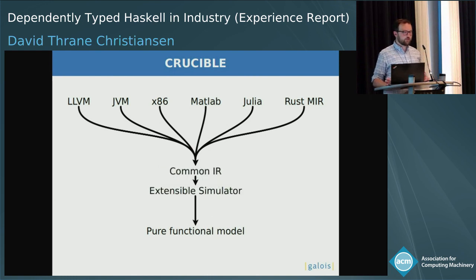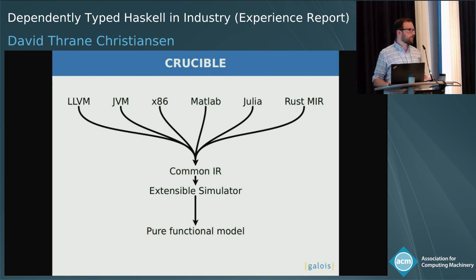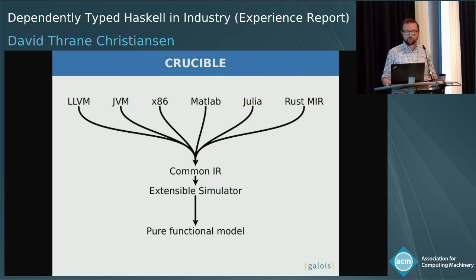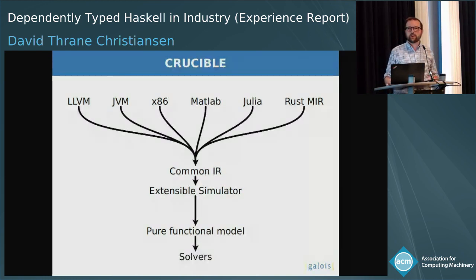Crucible really maps all of these into a common intermediate representation with language-specific extensions. In the case of LLVM, it'll be the memory model. In the case of something like MATLAB or Julia, it'll be the primitives available in those languages but not in, say, x86 machine code. And why do we want this pure functional model of what these imperative programs do? It's because that's what solvers understand, so we can kick it over and start reasoning about it somewhere else.